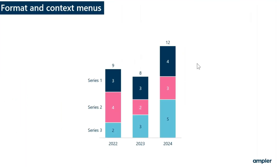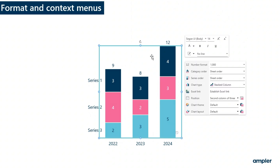AmpliCharts has two main menus, which can be found on left mouse click and right mouse click. On the left mouse click, you'll find the format menu. In the format menu, you'll be able to change the font, the font size, and the font formatting. In addition, you can change the outline of the chart. When the full chart is selected and you change the font or font formatting, all formatting will be changed on the chart.